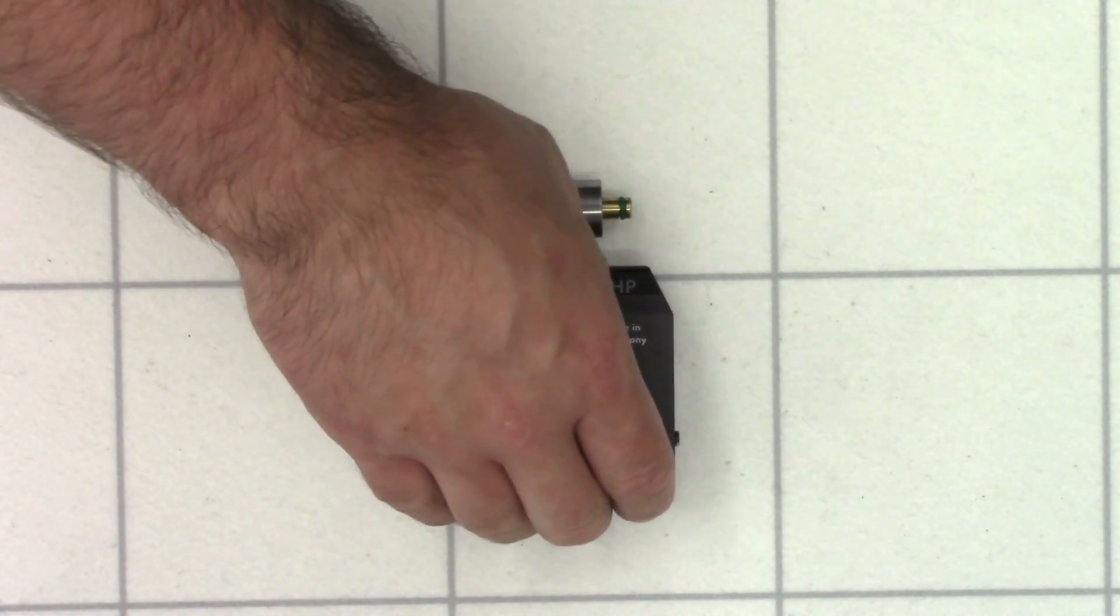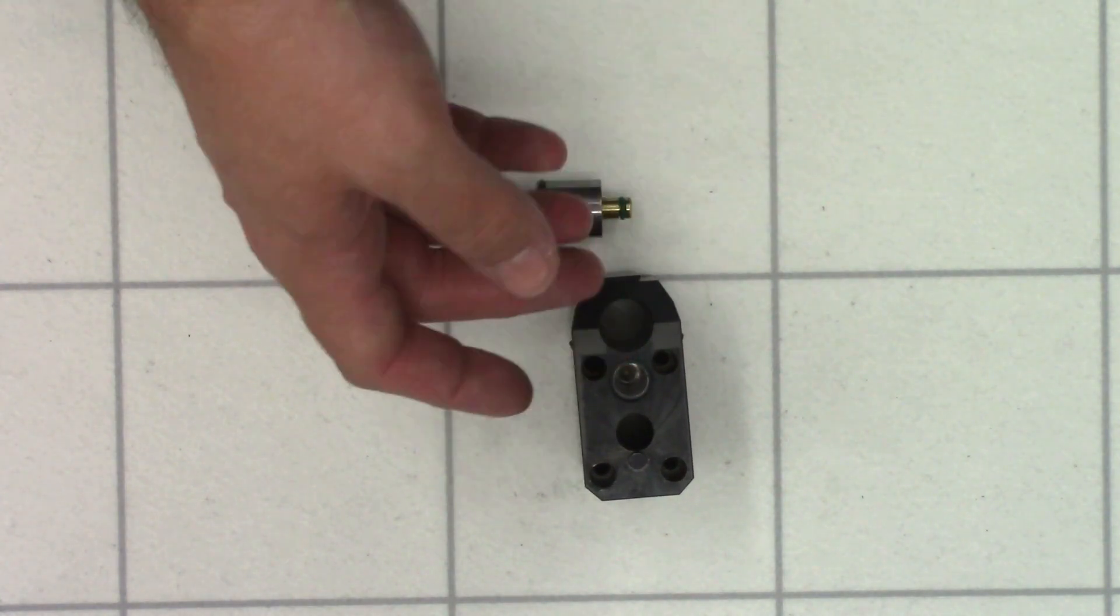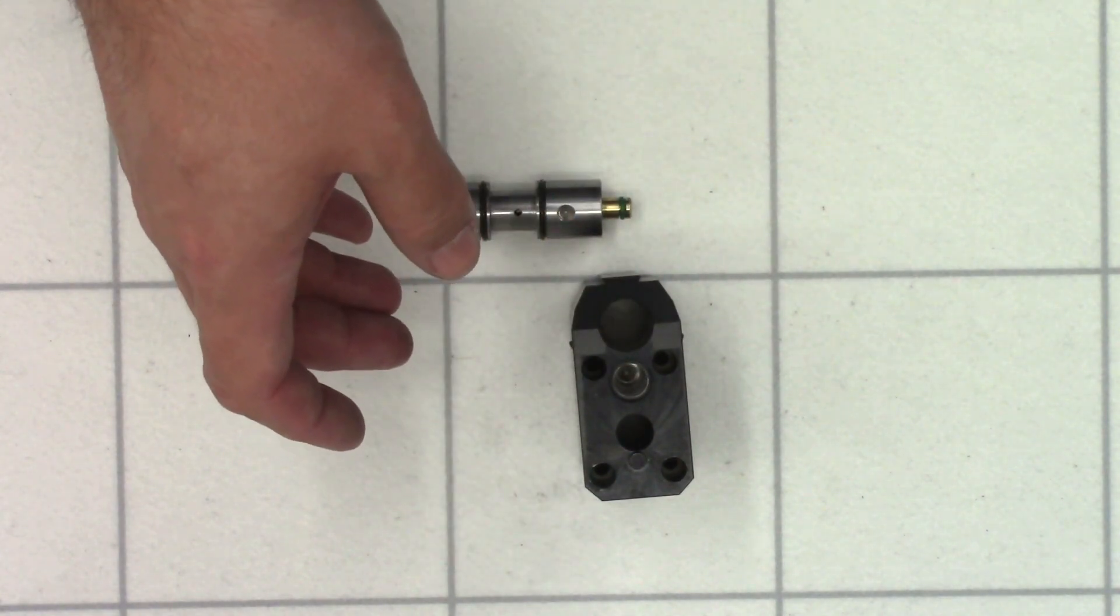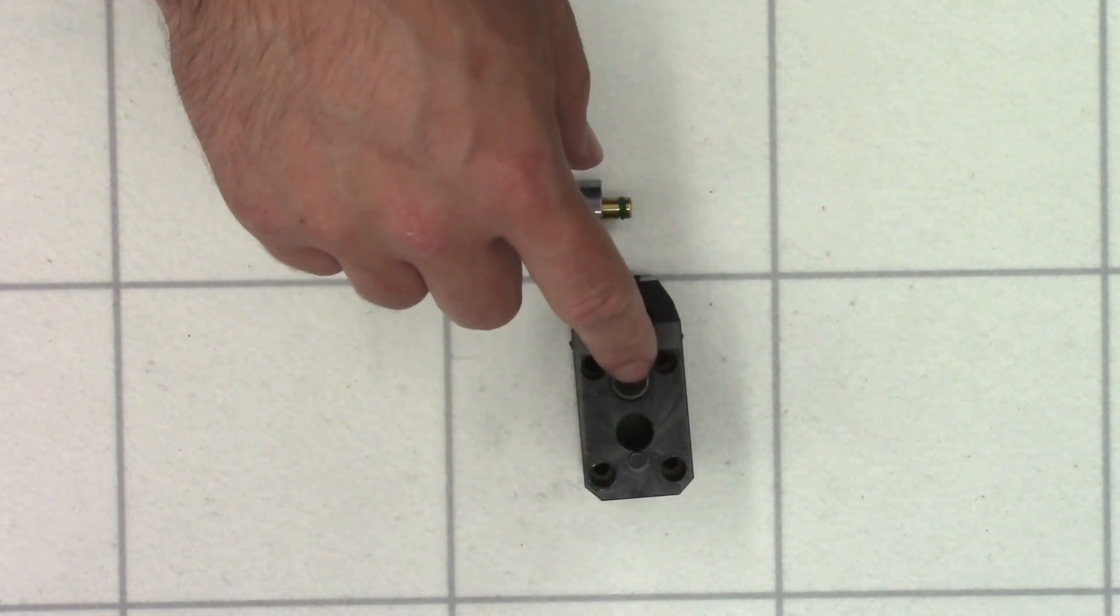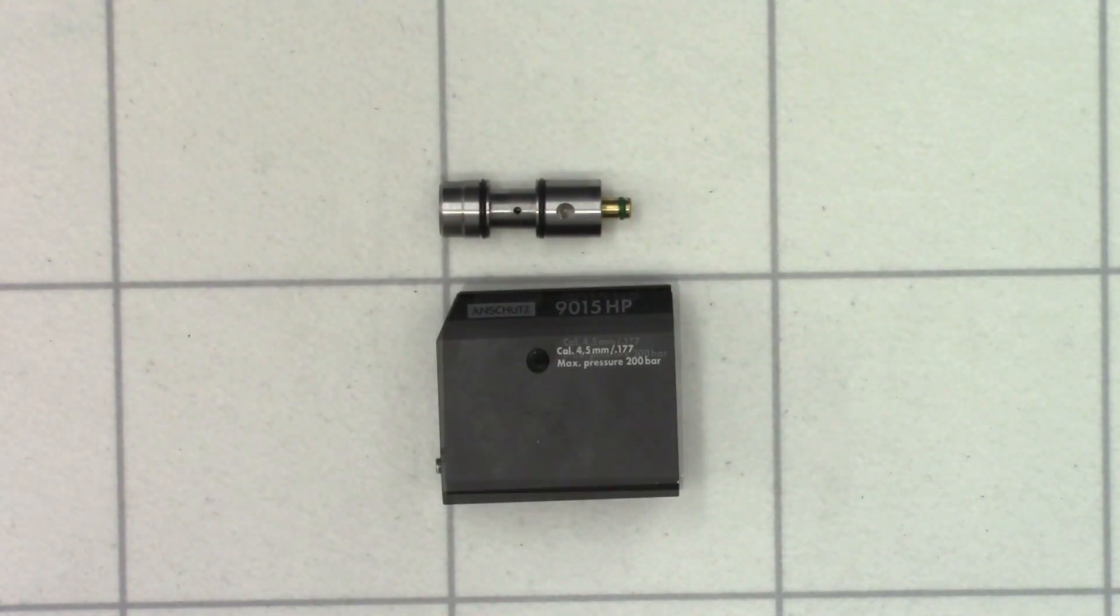And very briefly, just to those of you who are interested, the original plenum size was around 4 cc's of air. And when we drilled it out, we increased that to roughly 5 cc's of air. So still a fairly small plenum size, although hopefully we'll still see some benefits from enlarging it.